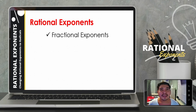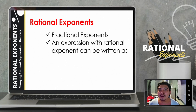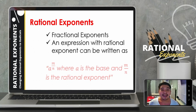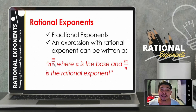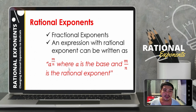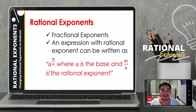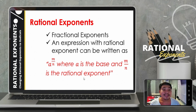When we talk about rational exponents, these are fractional exponents. An expression with a rational exponent can be written as a raised to m over n. This expression has a rational exponent since the exponent is written in fraction form. Just like in exponential expressions, a here still stands for the base, while m over n is the rational or fractional exponent.